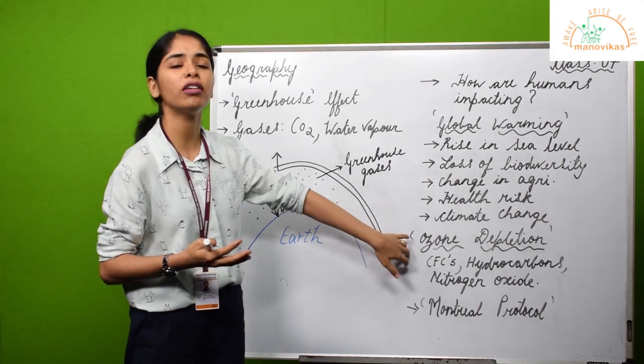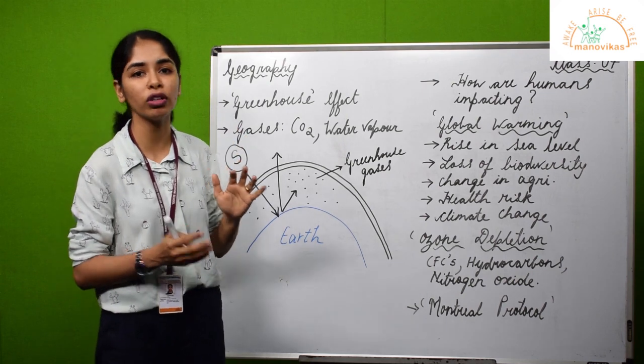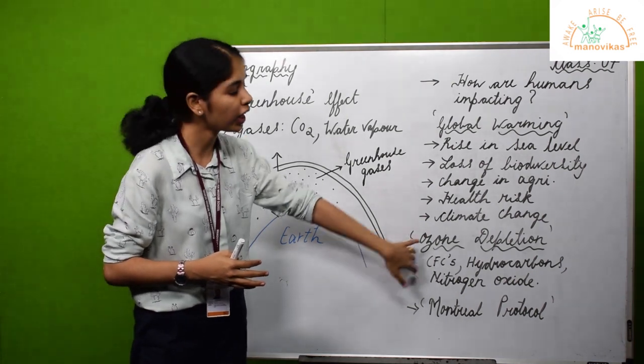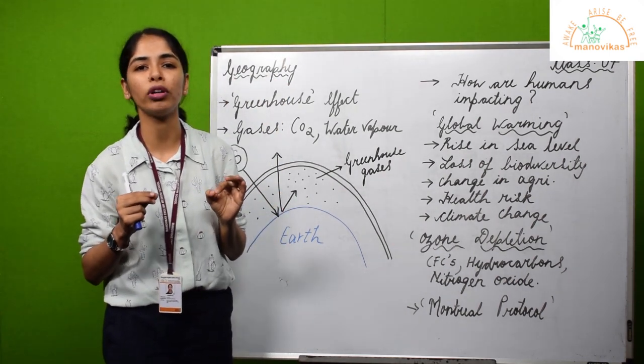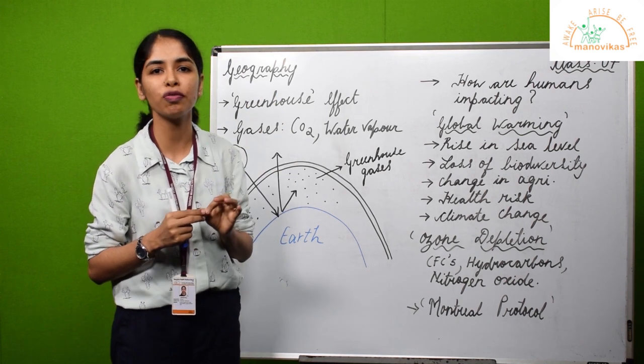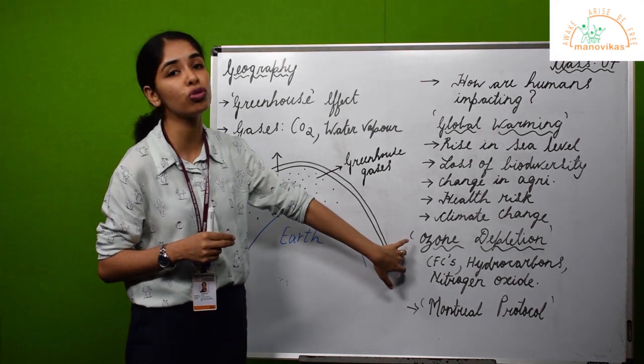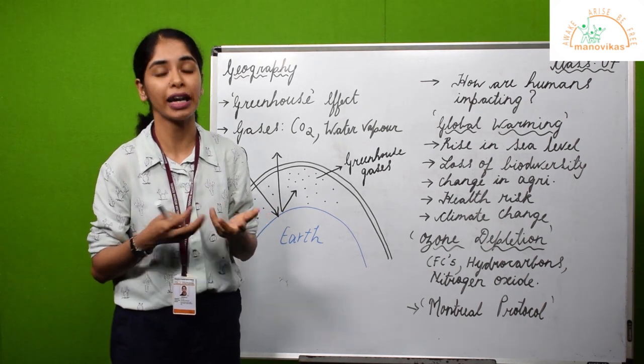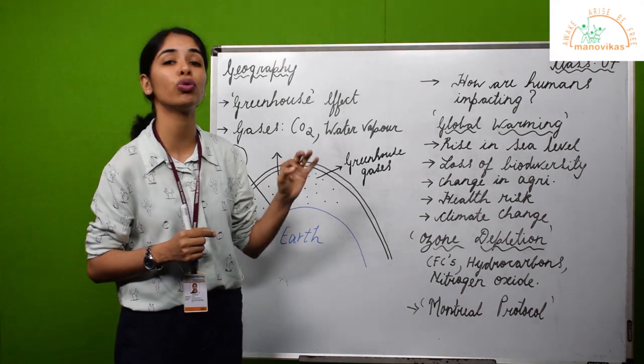Moving on further, another important issue corresponding to the atmosphere of the earth besides greenhouse effect is ozone depletion. As we discussed in a previous video, ozone is a very important gas, a type of oxygen which is found in the stratosphere which shields us from harmful UV rays. But nowadays, this ozone layer is being depleted and extinguished.